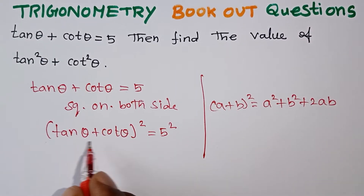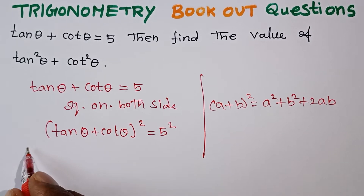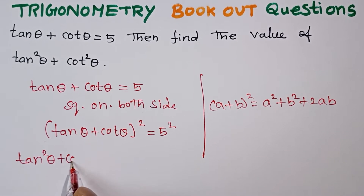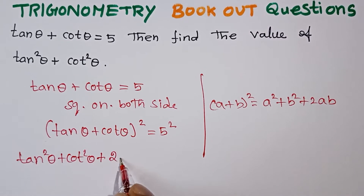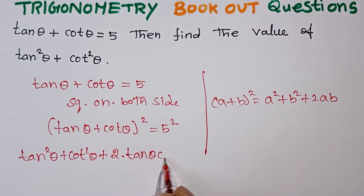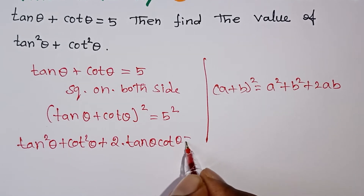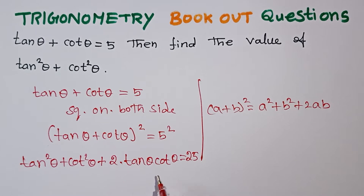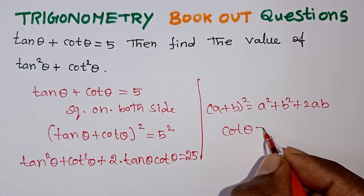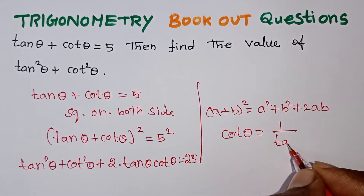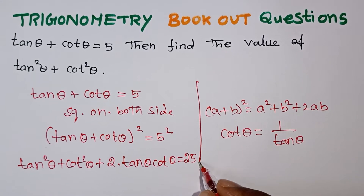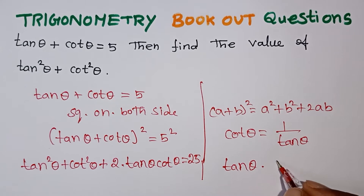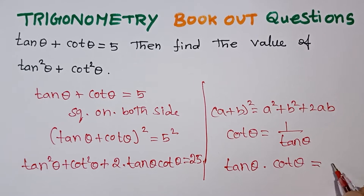So squaring both sides gives: tan²θ plus cot²θ plus 2 times tan θ times cot θ equals 25. Now, tan θ and cot θ are reciprocals, so tan θ multiplied by cot θ equals 1.